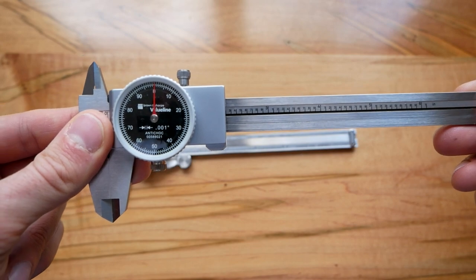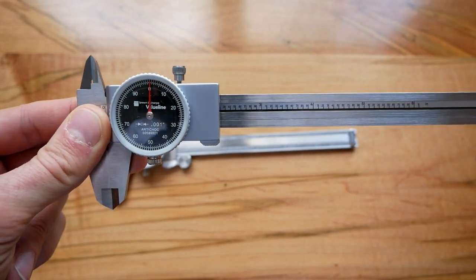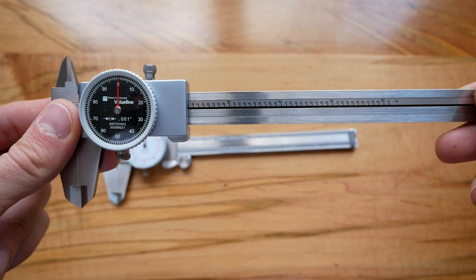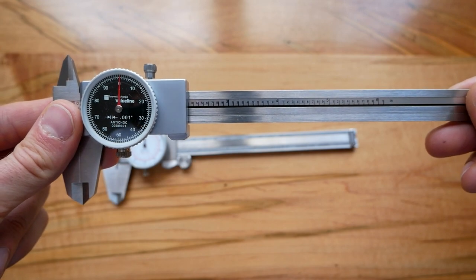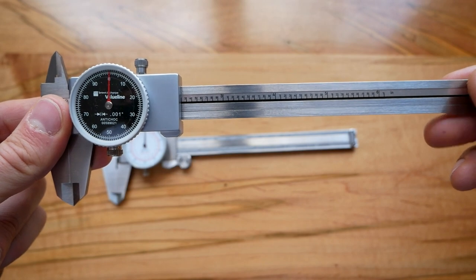If I focus in here, it says Brown and Sharp value line. So I'm not exactly sure what that means, if these are a cheaper line of tools that Brown and Sharp's making. I have a lot of vintage Brown and Sharp, and they're very nice. But I know a lot of the manufacturers are sometimes not what they used to be with some of these tools.